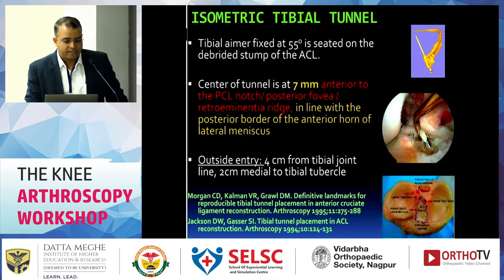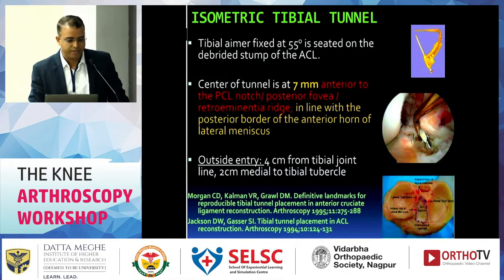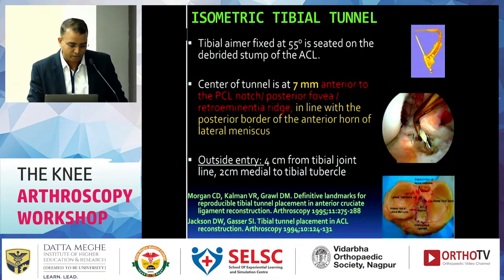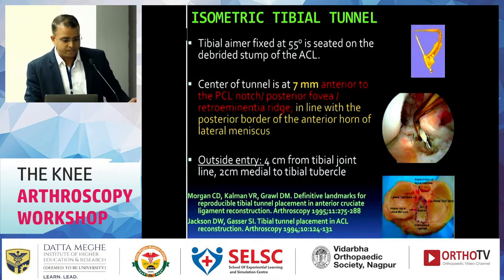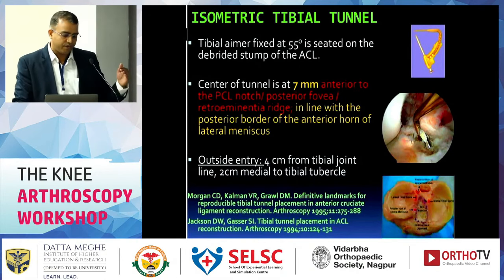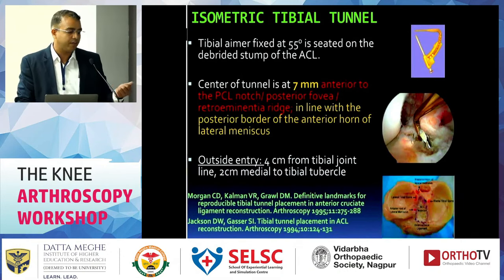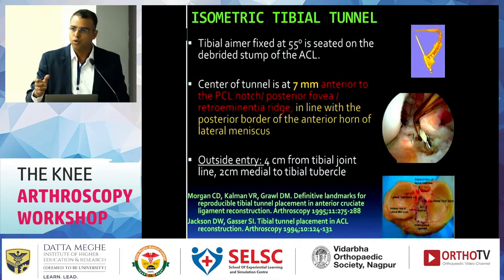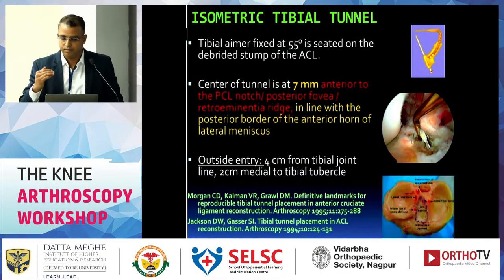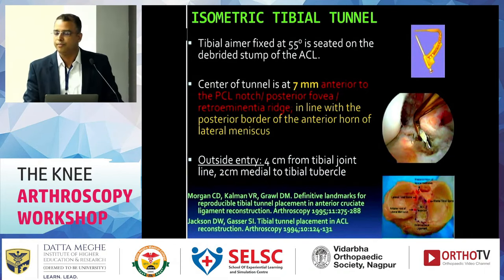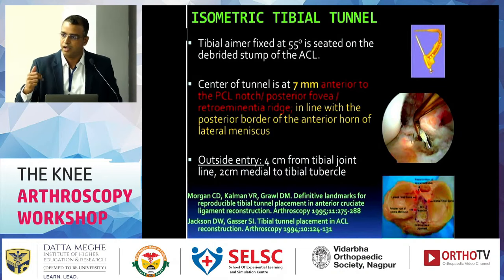The center of the tunnel should be at 7 mm anterior to the PCL notch, posterior fovea, or the retro-eminential ridge, in line with the posterior border of the anterior horn of the lateral meniscus. Externally, it should be 3 to 4 cm away from the tibial joint line or 2 cm medial to the tibial tuberosity, or 1 cm above the hamstring attachment point.